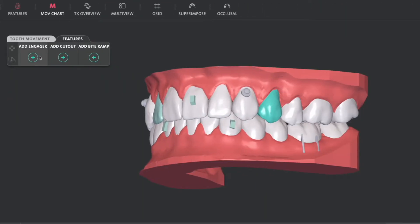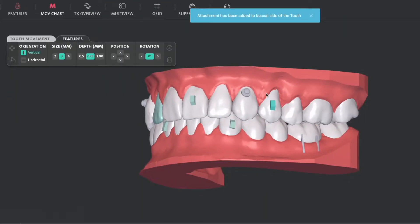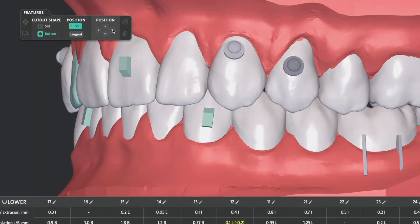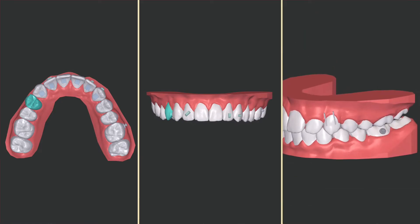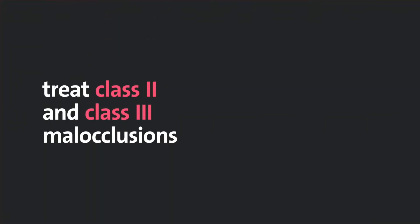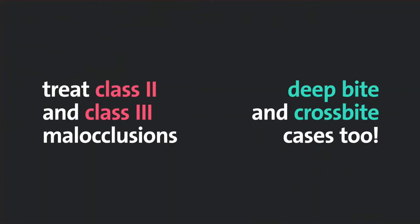You can even prescribe and place more advanced aligner features such as bite ramps, engagers and cutouts for elastics that can expand your addressable indications to include class 2 and class 3 cases, as well as deep bite and cross bite cases.